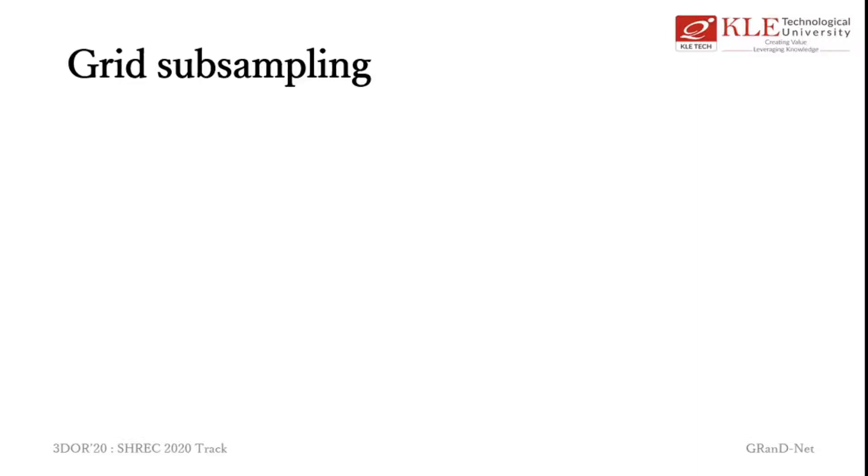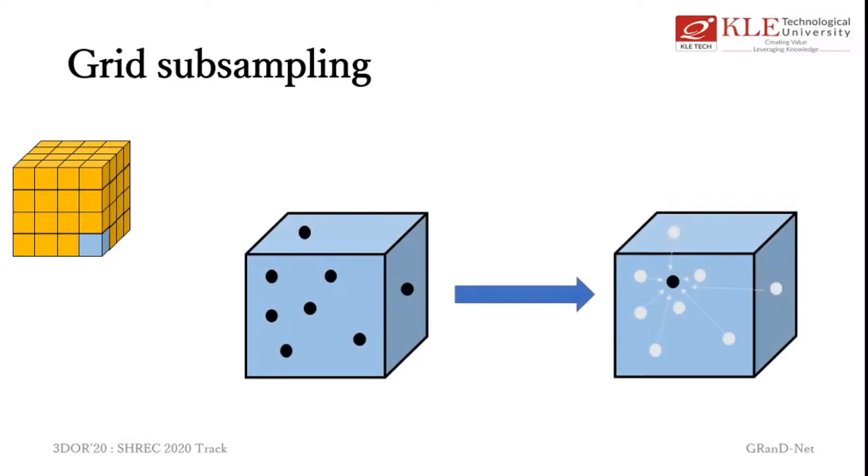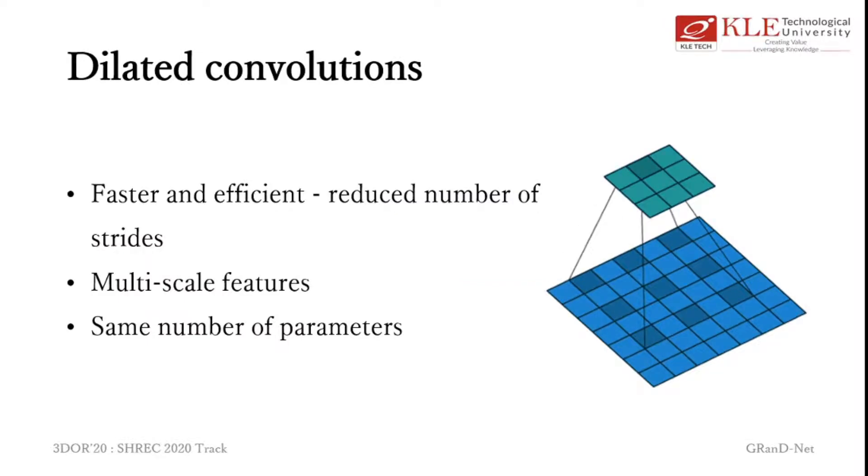Grid subsampling is used as a preprocessing step to get a fixed number of points as input to our model. The entire scene is divided into a grid of predetermined size as shown here. All the points inside the grid are then replaced with a representative point obtained by calculating the mean of all points. Dilated convolutions bring in an extra parameter that controls the receptive area of the kernel which convolves around the input by including holes or gaps into the kernel as shown. Thus, without increasing the number of parameters, we increase the receptive area of the kernel over the input making the convolutions more efficient and faster while allowing us to capture multi-scale features.